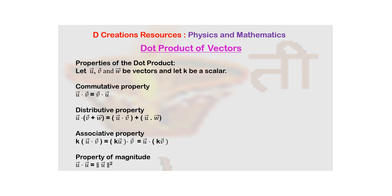Then there is associative property. So if you multiply K to U bar dot V bar, it is as good as saying K U bar dot V bar, and it is U bar dot K V bar.